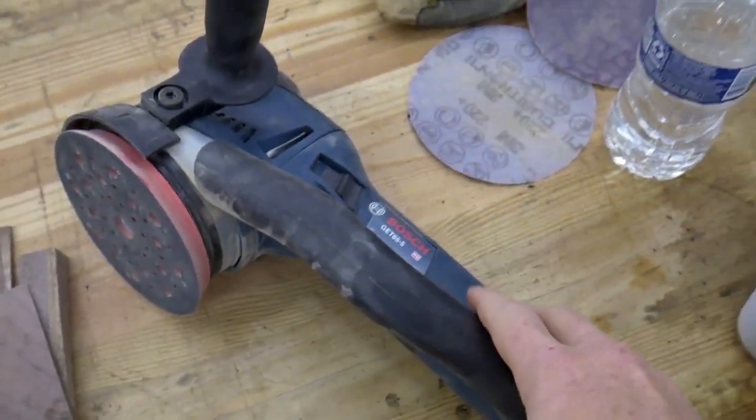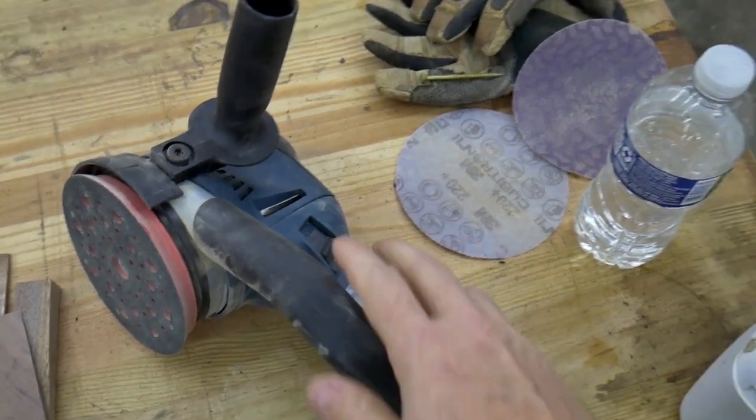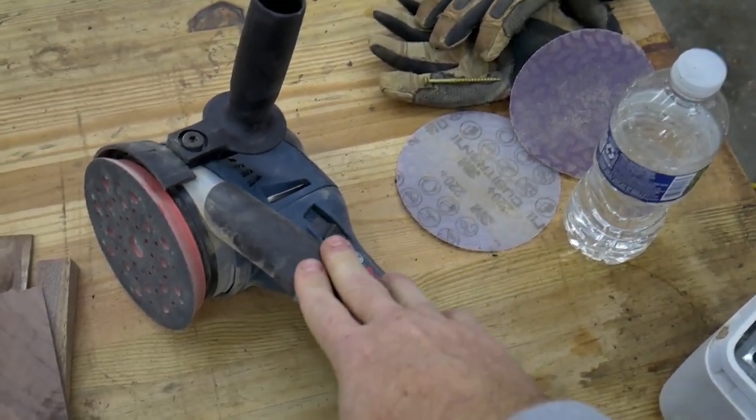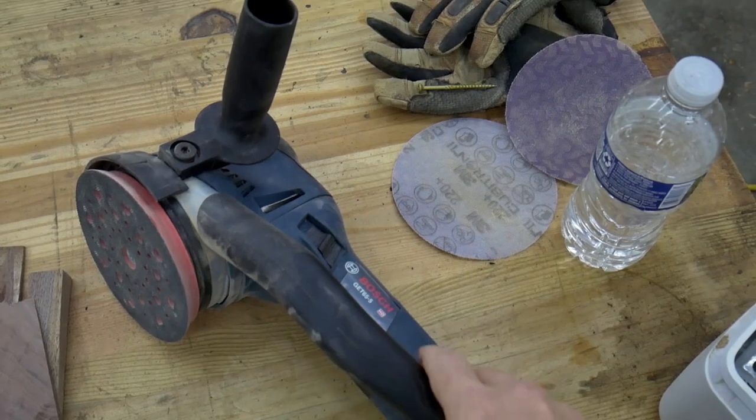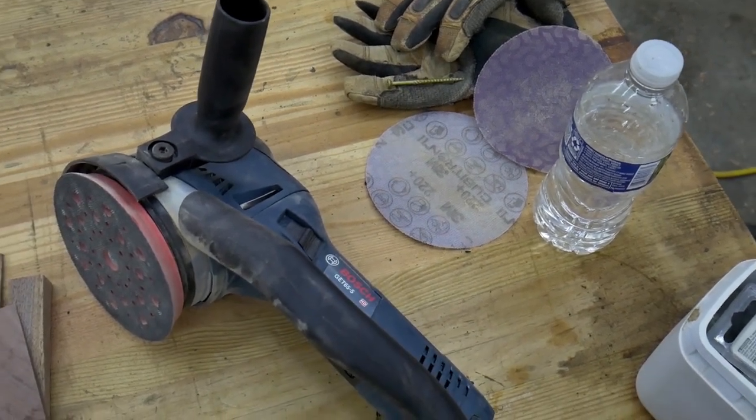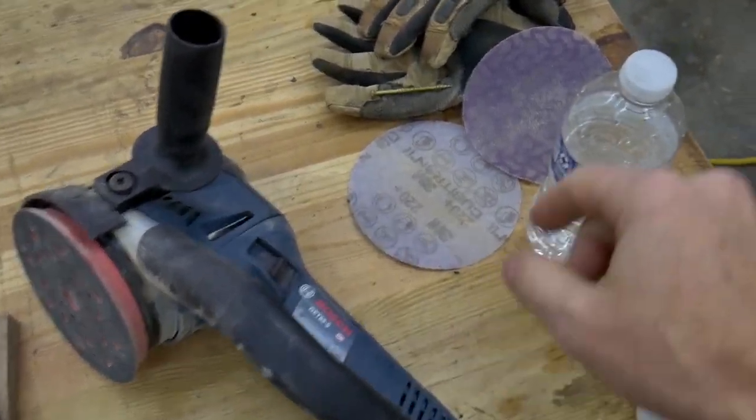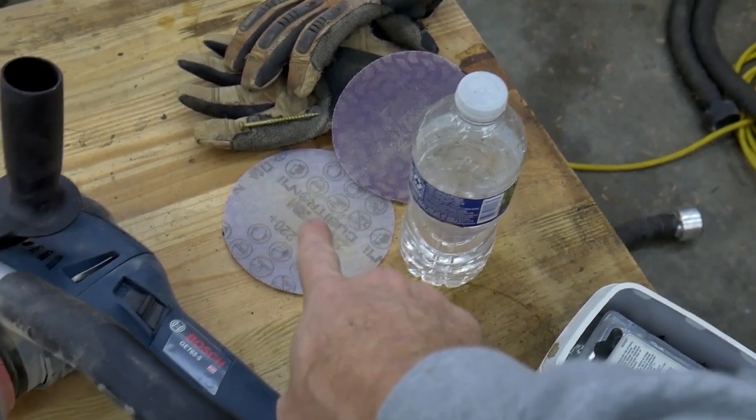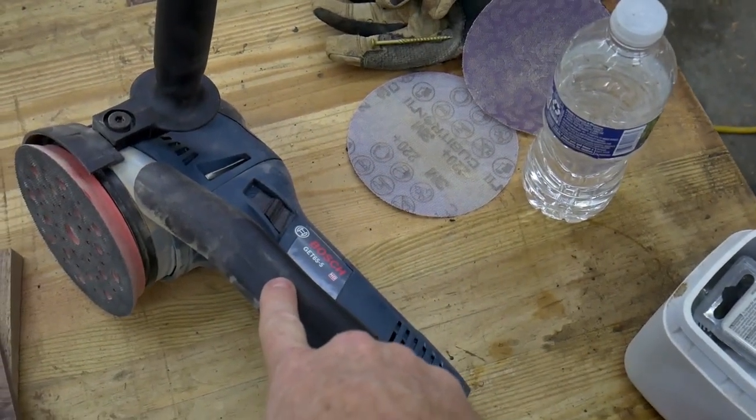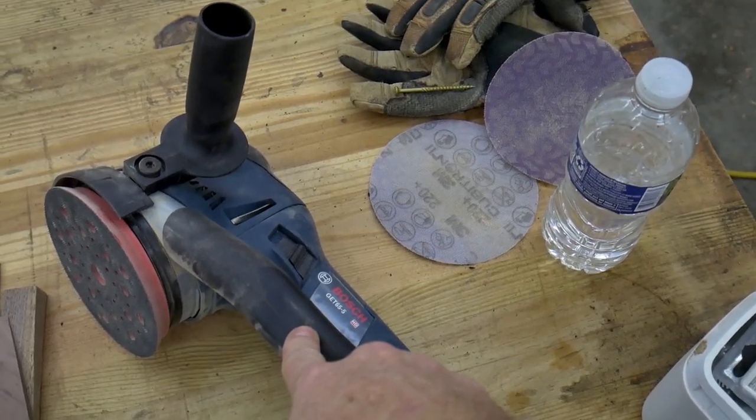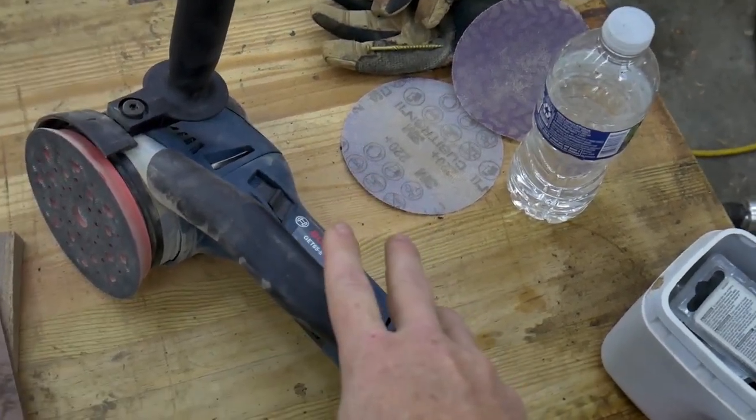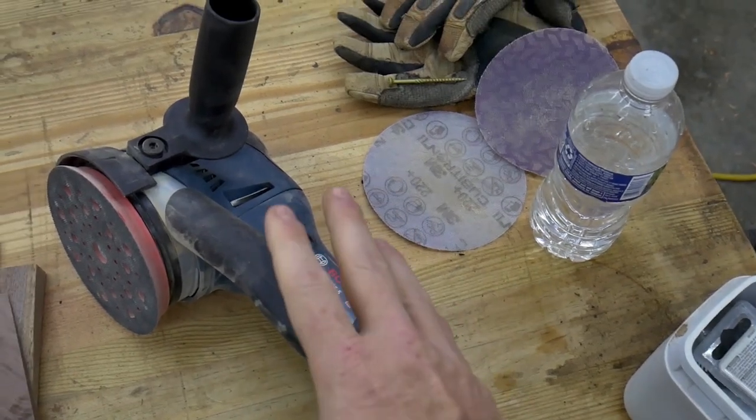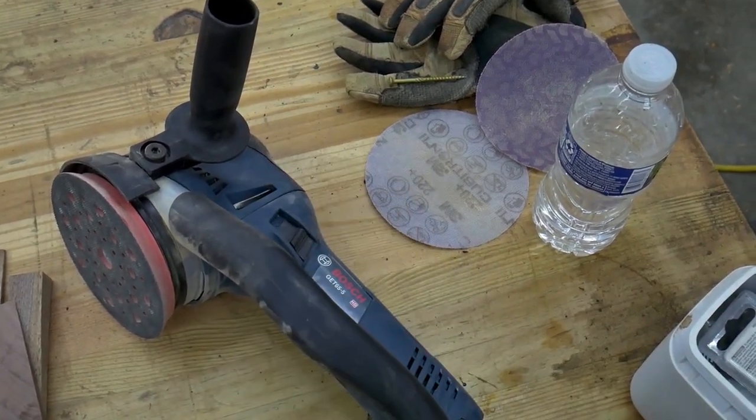When I upgraded to this beast here, the ease of sanding and the quality of the finish improved even more. In my opinion, the combination of the 3M Cubitron 2 extract sandpaper with this Bosch GET 65-5 sander is about as good as you can get for fine sanding and finish sanding of your workpieces.